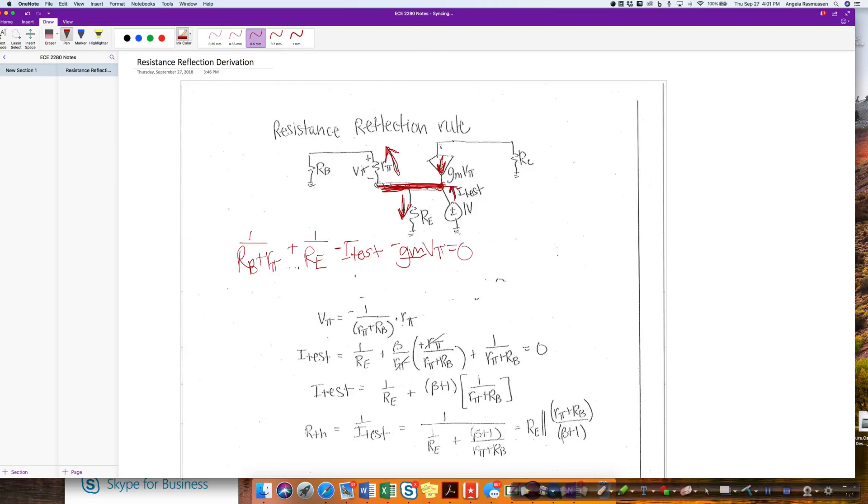I make a note that gm can also be described as beta over Rpi, which I'm going to use in a minute. And then I want to find an equation for vpi. vpi is going to be a negative of this current because of the polarity difference. These are opposite polarities.